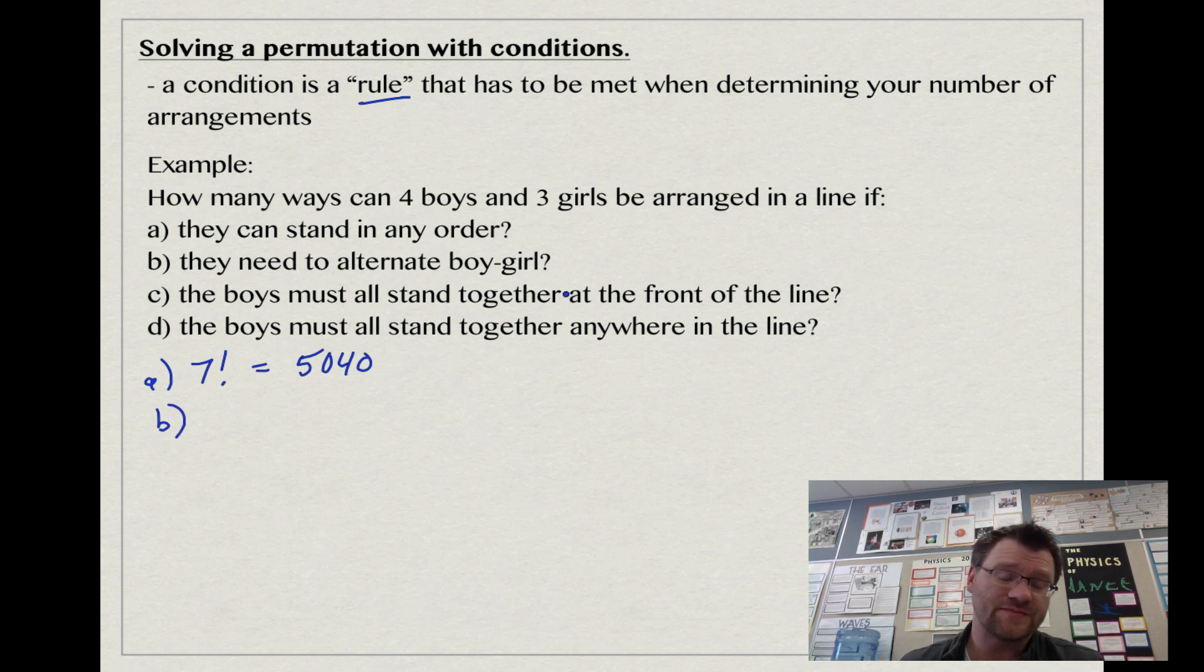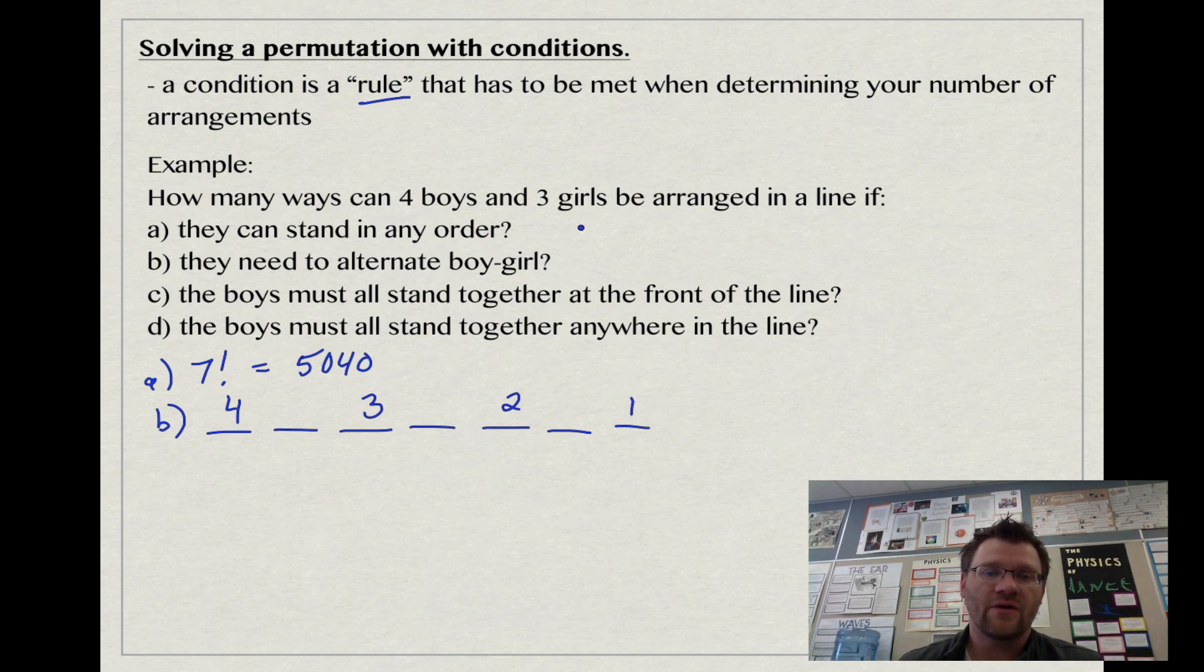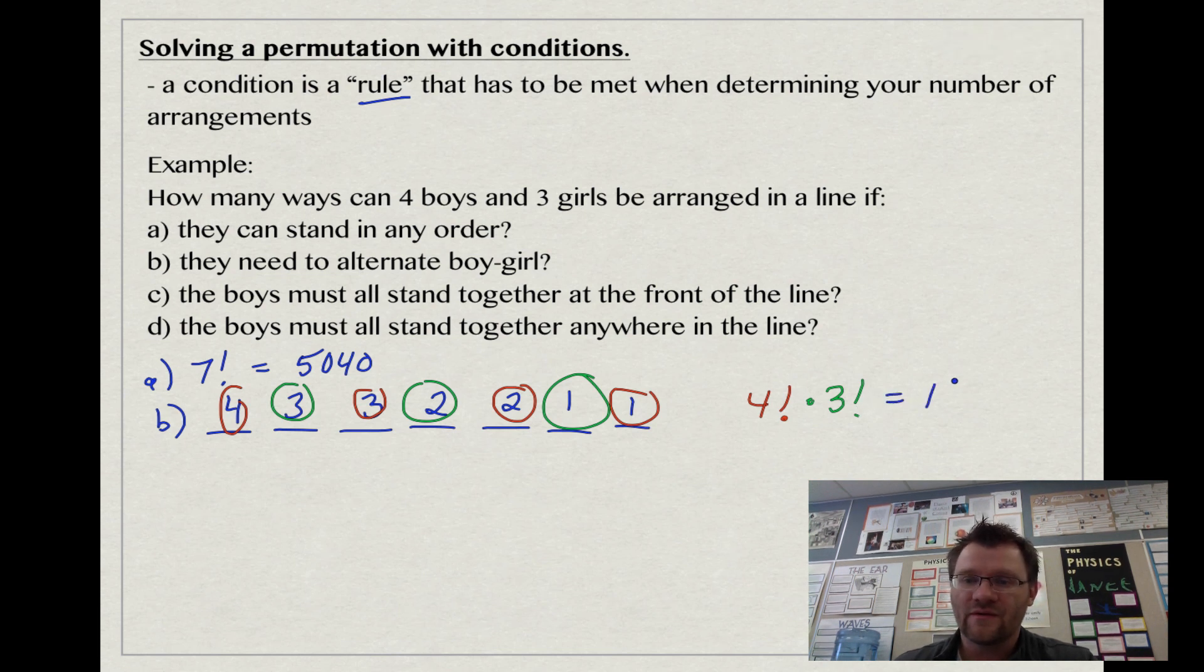When we start throwing in some conditions, you might want to draw a diagram, like a fill-in-the-blank sort of thing. It says it has to alternate boy-girl. Since there's four boys and three girls, it has to start with a boy. We have an option of four different boys that could stand there, three boys, two boys, and one boy. In the girls, there's three different girls that could stand here, two, and one. 4, 3, 2, 1 is just 4 factorial, and 3, 2, 1 is just 3 factorial. We can take 4 factorial multiply by 3 factorial and we get 144 different arrangements if you alternate boy-girl.